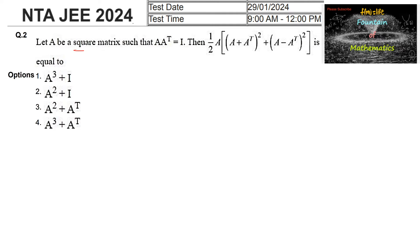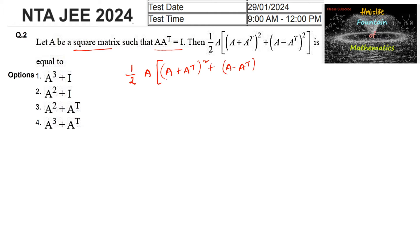Let A be a square matrix such that A into A transpose is equal to I. Then find the simplification of half times A into (A plus A transpose) whole square plus (A minus A transpose) whole square. Let us consider half into A into (A plus A transpose) whole square plus (A minus A transpose) whole square.